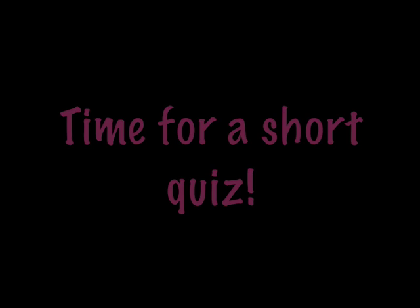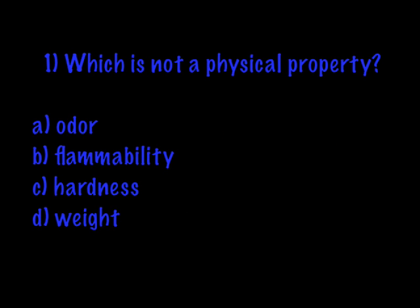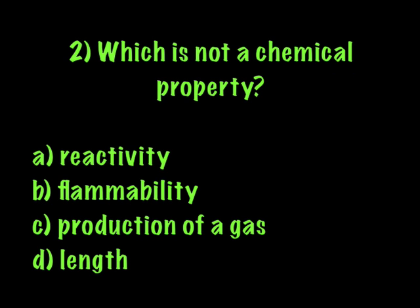Now time for a quiz. Number one: which is not a physical property? A. Odor. B. Flammability. C. Hardness. Or D. Weight. Number two: which is not a chemical property? A. Reactivity. B. Flammability. C. Production of a gas. Or D. Length.